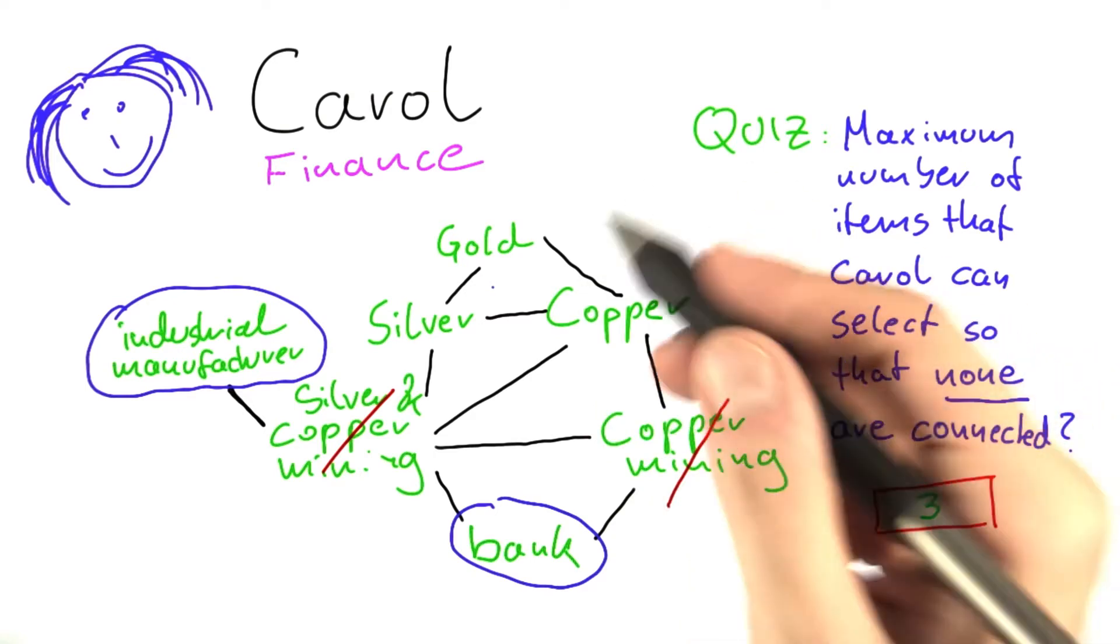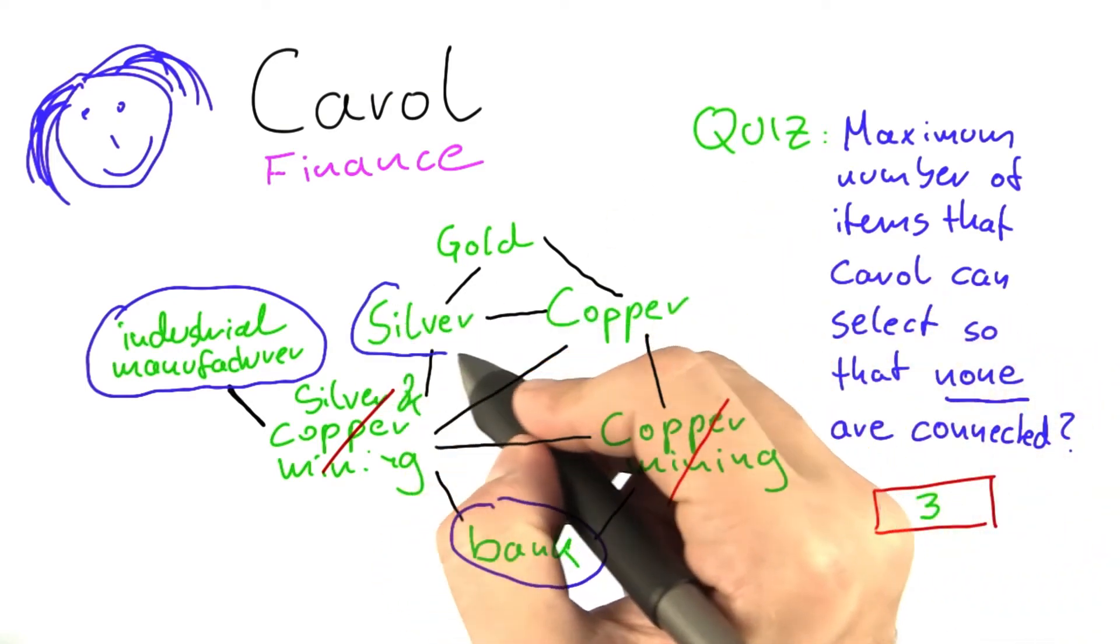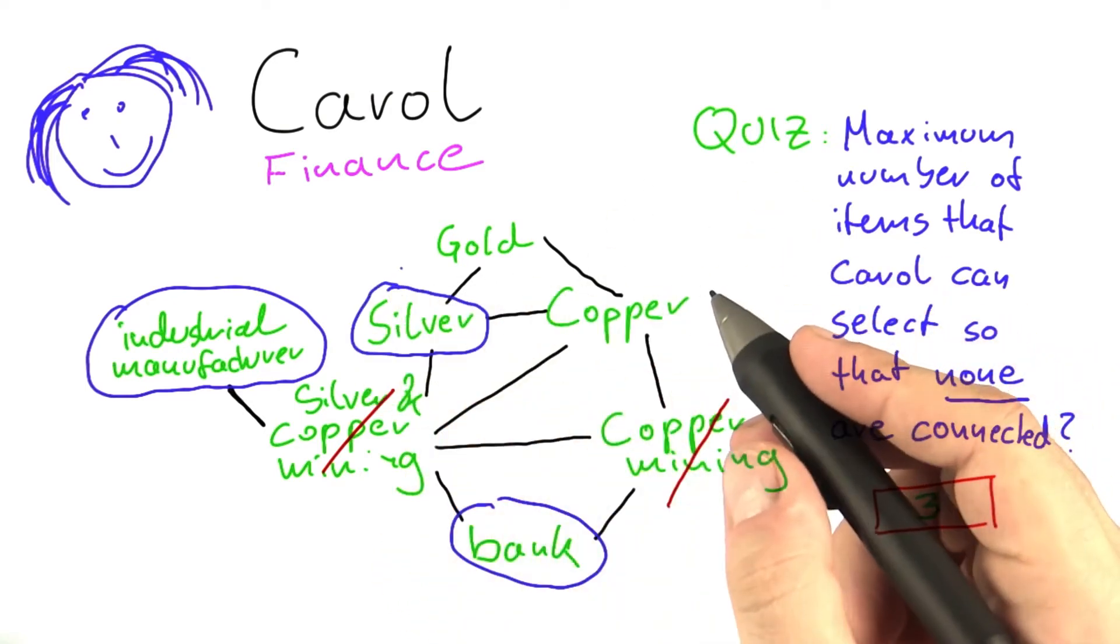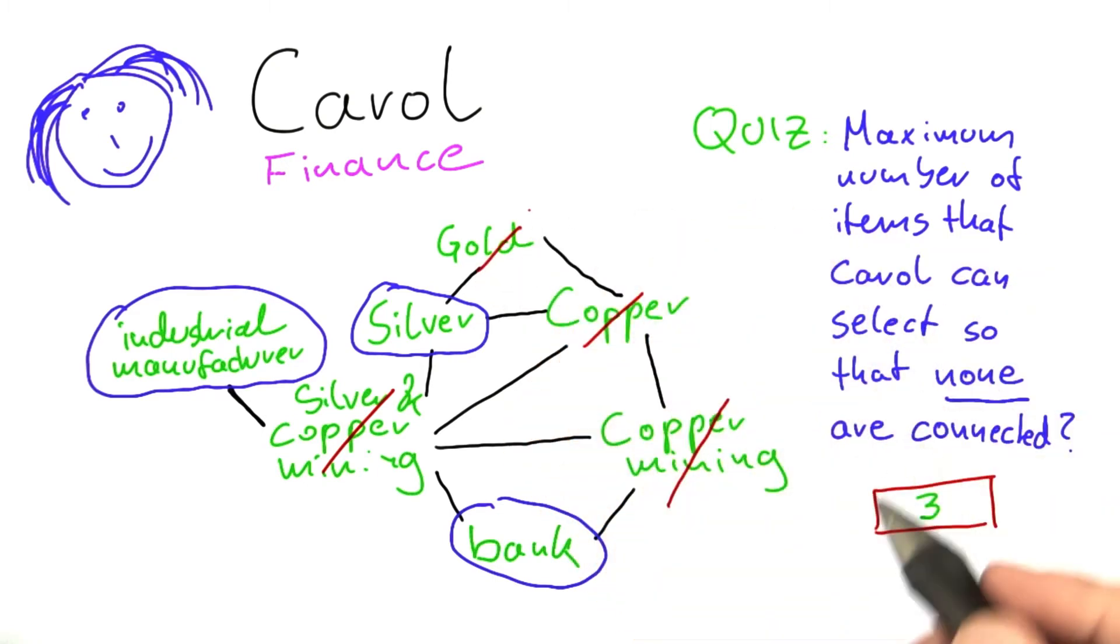And then she could also choose one of those metals here. So, let's say she also decides that she's going to invest in silver. But that means that copper and gold are out of the question.